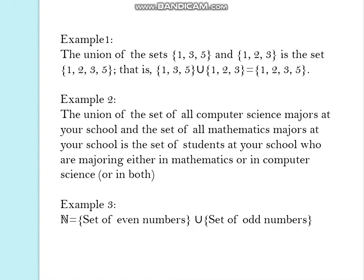Example number 2 is union of all computer science majors and the set of all mathematics majors. So if you consider the union it contains set of students who are majoring either in mathematics or in computer science. In the example number 3 if you consider set of even numbers and set of odd numbers you can see that its union is set of natural numbers which contains even numbers as well as odd numbers. These two sets unite to form the set of natural numbers.